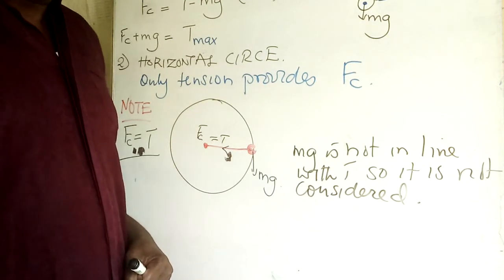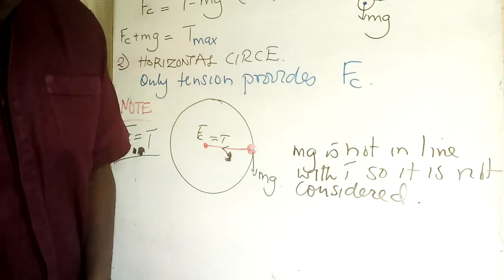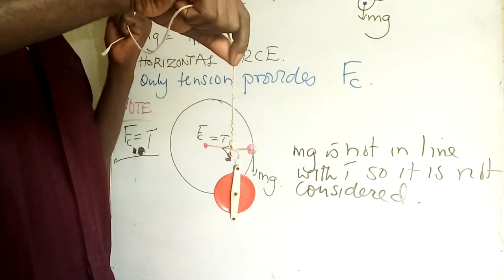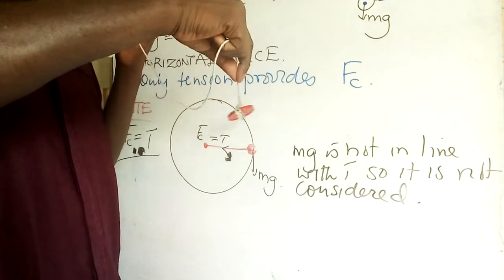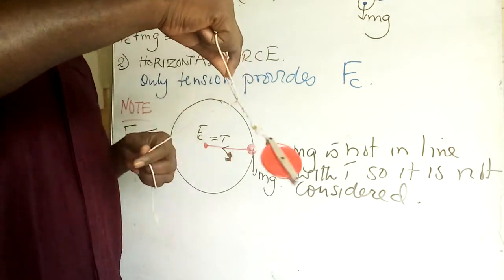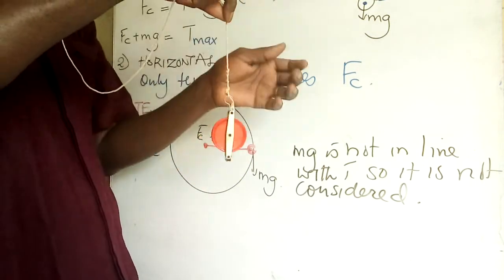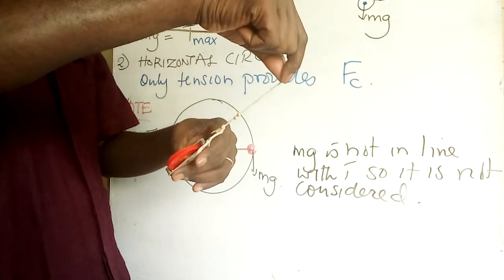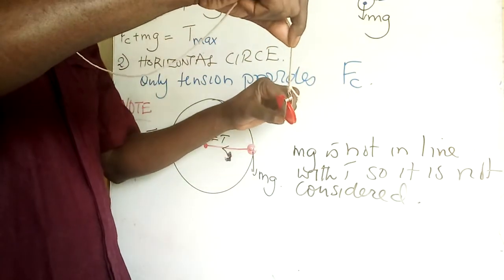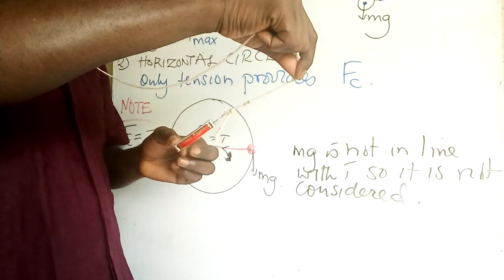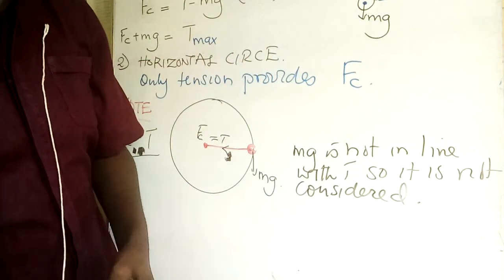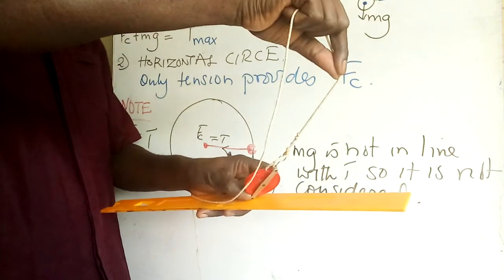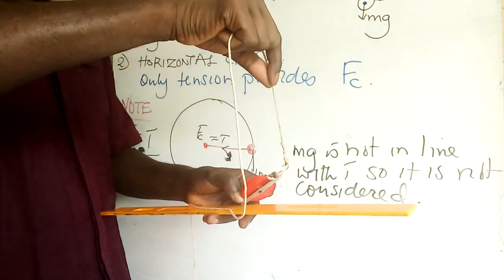Now we consider the conical pendulum. I am holding the top and the body rotates, making the string swing outward. At any point the string makes an angle with the vertical — you can see the string is at an angle to the ruler. Understanding this angle is key to analyzing the conical pendulum, which we will work through next.